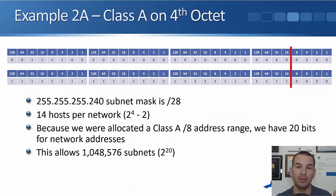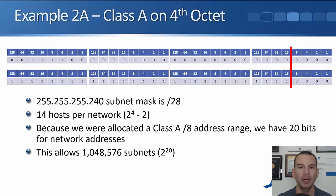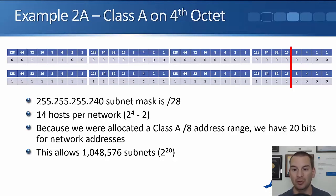The subnet mask 255.255.255.248 given in dotted decimal is the same as /29. On the exam you may be given it as slash notation or in dotted decimal. If you write out the last octet: 128 plus 64 is 192, plus 32 is 224, plus 16 is 240, plus 8 is 248, plus 4 is 252, plus 2 is 254, and plus 1 is 255. Once you've practiced this a little bit you'll be doing it without even thinking about it.